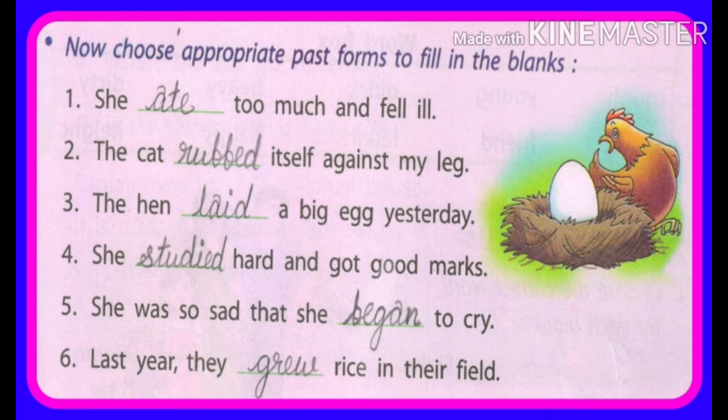Number five: She was so sad that she began to cry. वो बहुत दुख में थी और वो रोना शुरू की. Number six: Last year they grew rice in their field. पिछले साल वे अपने field में चावल, जो rice होता है उसको उगाये थे, लगाये थे.